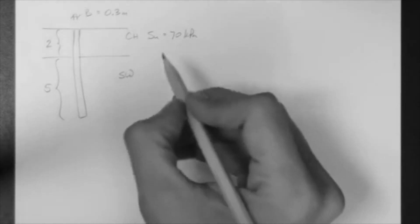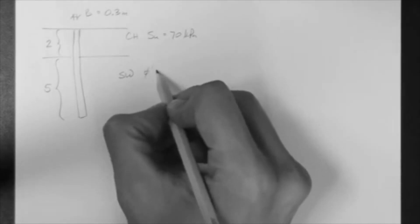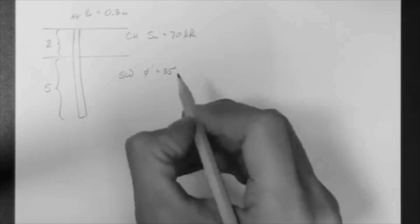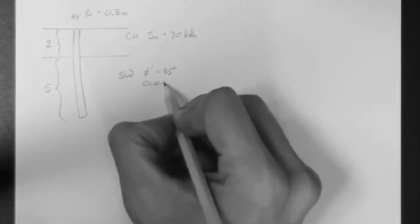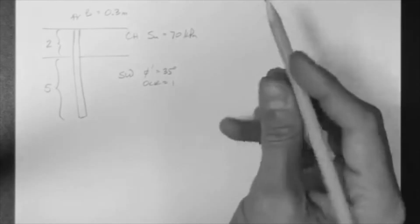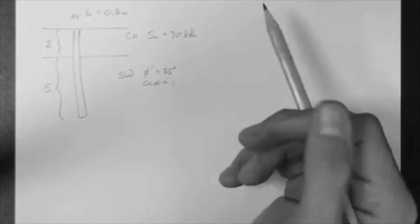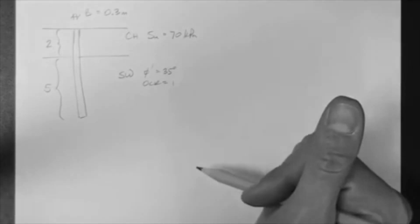Let's say this is a well-graded sand with phi equal to 35 degrees, and let's say the OCR is 1.